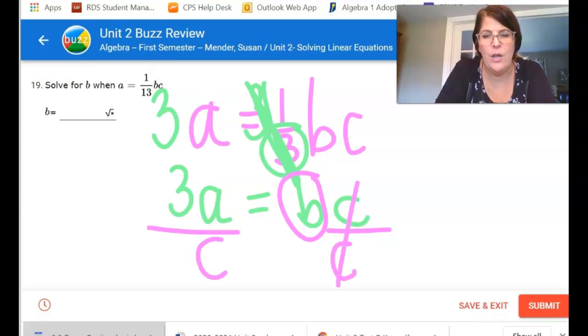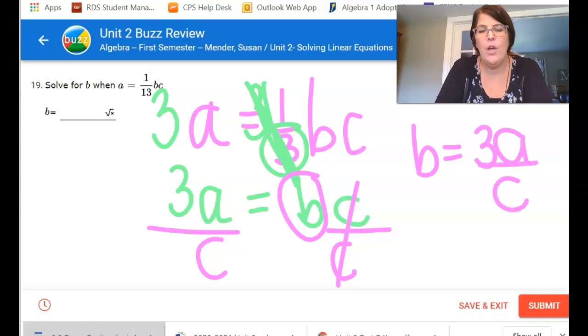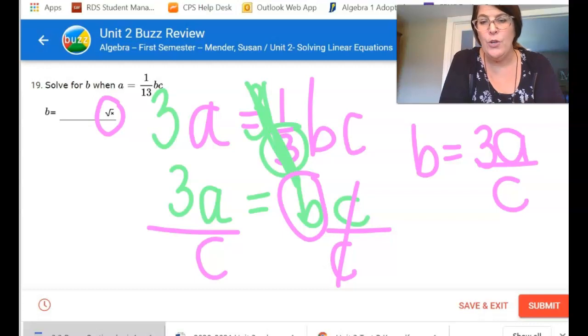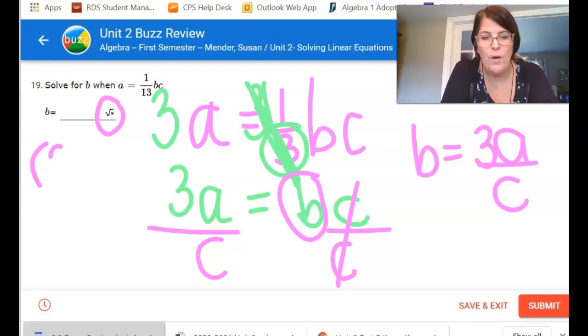So my answer is B is equal to 3a over C. Now see this thing right here? This is the equation editor, so when you enter that you want to make sure that you're entering it the exact right way. You need to use the equation editor to check.